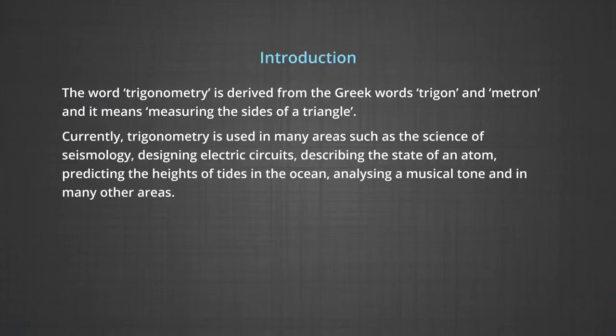In the process, we will also develop the relationship between the arc length, angle at the centre and radius. First, let us understand what is the meaning of the word trigonometry. Trigonometry is derived from the Greek word trigon and metron and it means measuring the sides of a triangle.